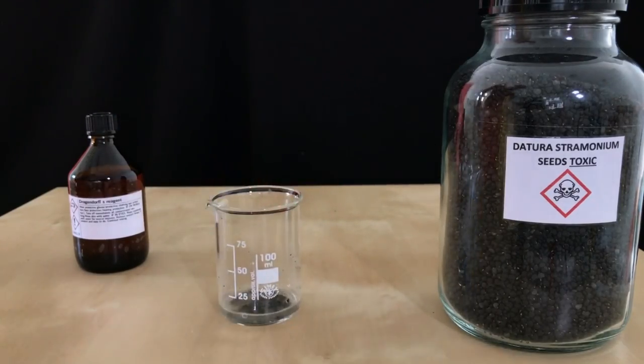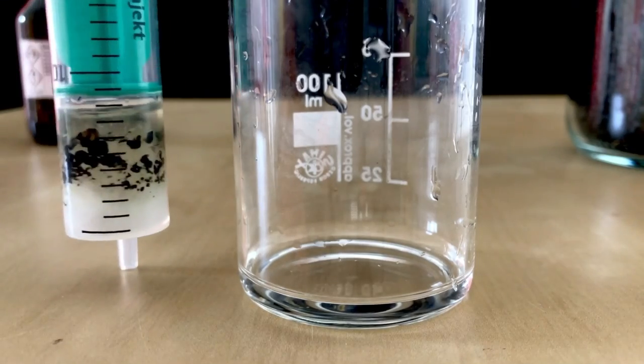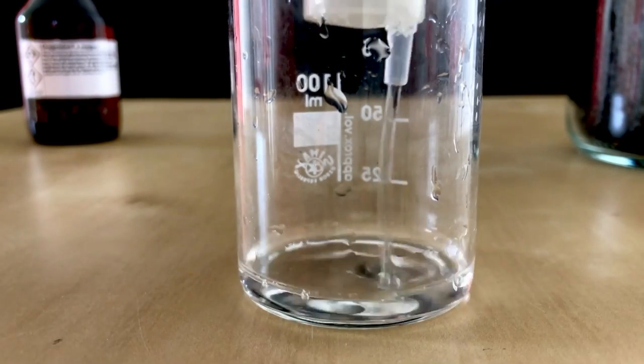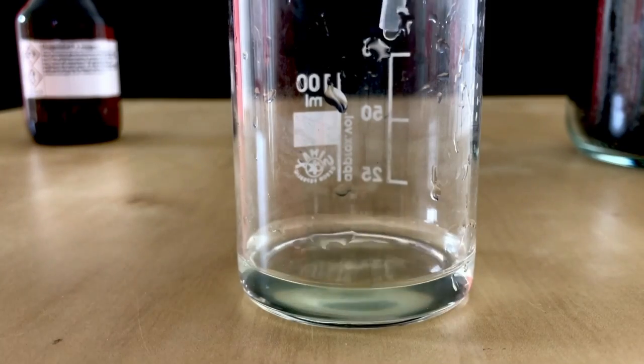Before proceeding we need to get all of the small chunks of crushed up Datura seeds out of the solution. Therefore a syringe filled with some cotton was used to get rid of the contaminants.